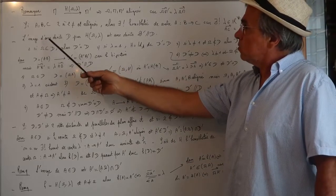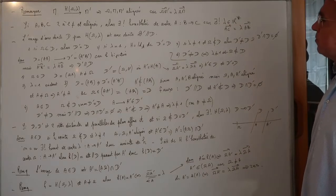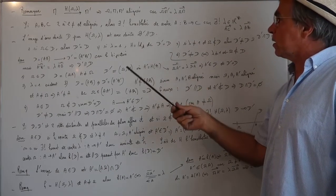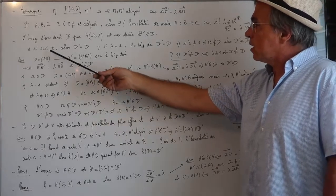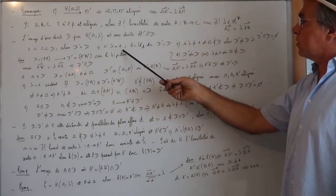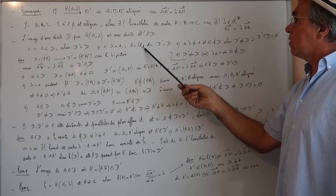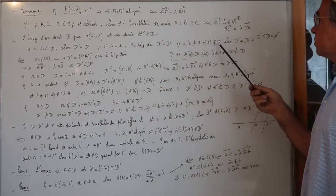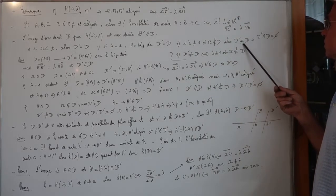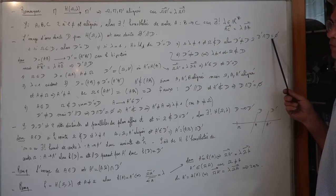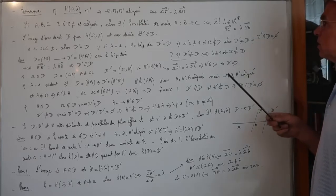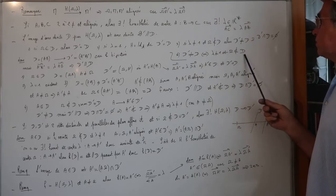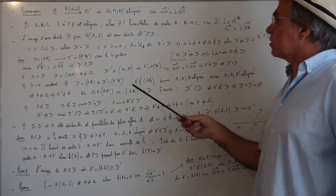L'image d'une droite D par l'homothétie de centre Ω et de rapport λ est une droite D' parallèle à D. Si Ω appartient à D, la droite D' est confondue avec D. Si λ = 1, H est l'identité, donc D' = D aussi. Si λ ≠ 1 et Ω n'appartient pas à D, alors D' est différente de D — c'est du vrai parallélisme, les droites n'ont pas d'intersection. D' est différente de D si et seulement si λ ≠ 1 et Ω n'appartient pas à D.